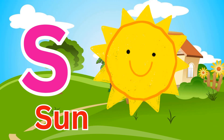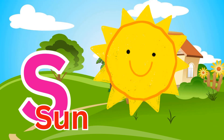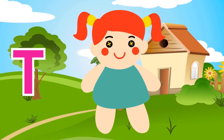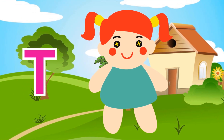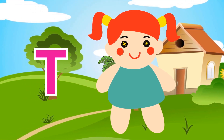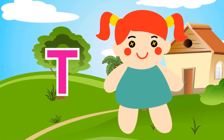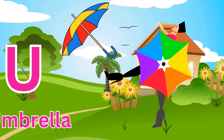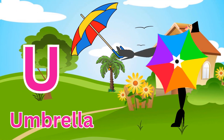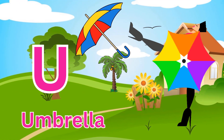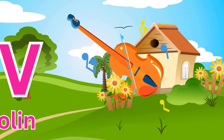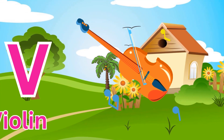T is for Toad, T-T-Toad. U is for Umbrella, U-U-Umbrella. V is for Violin, V-V-Violin.